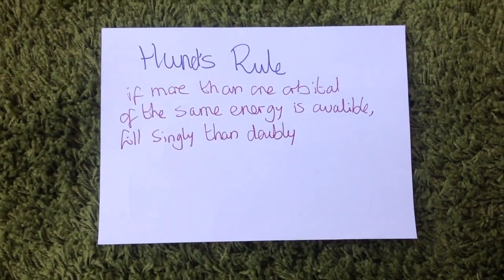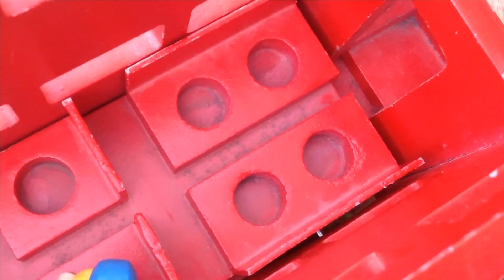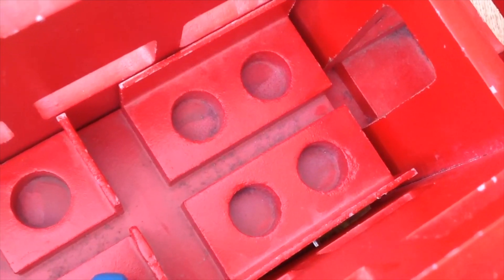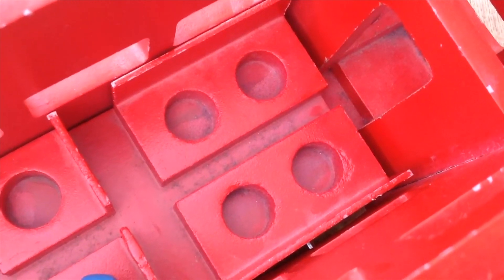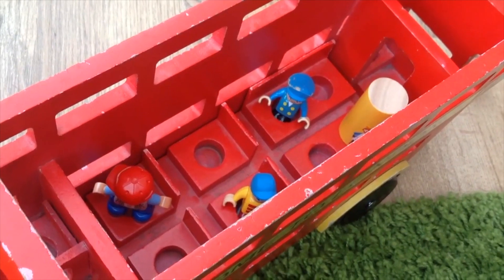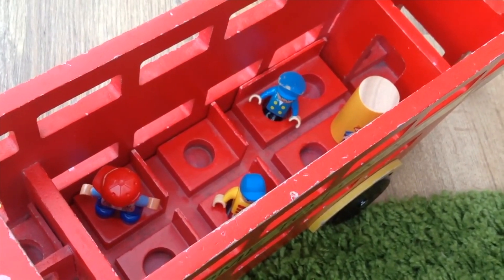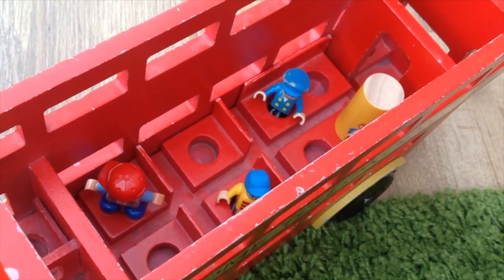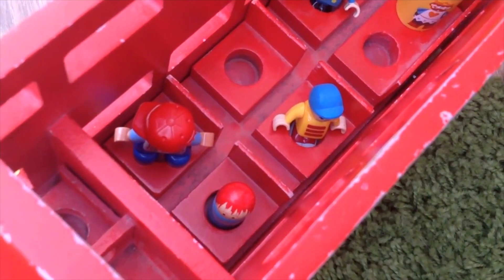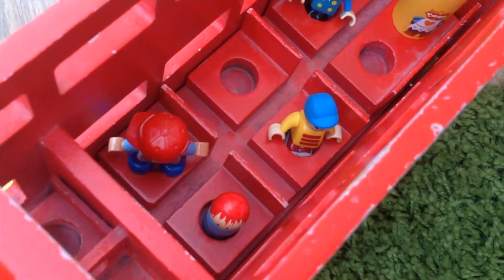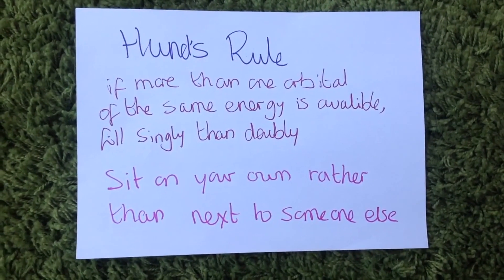Hund's rule says that if more than one orbital of the same energy is available, fill singly rather than doubly. We have some pairs of seats here — if you're getting onto a bus or a train and you see a pair of seats where one is empty and one has a person sitting in it, you sit singly rather than doubly. Once each pair has been filled singly, we can then start to fill doubly. The next person very reluctantly has to sit next to somebody else. The night bus version of Hund's rule: sit on your own rather than next to somebody else.